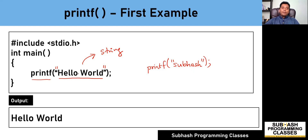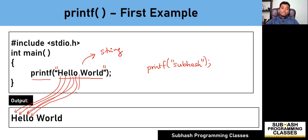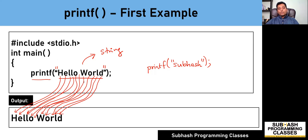Now, how does printf function work? Printf, the moment it gets the set of characters present in between double quotes, it starts fetching these characters one by one. In our example, the first character is H, so H gets printed on the screen, then E, then L, then another L, then O. Even the space is considered as a character in C language and gets printed. It continues with W, O, R, L, D. The moment printf encounters the closing double quote, it understands that this is the end of the string and there are no more characters to be printed, so printf function terminates.